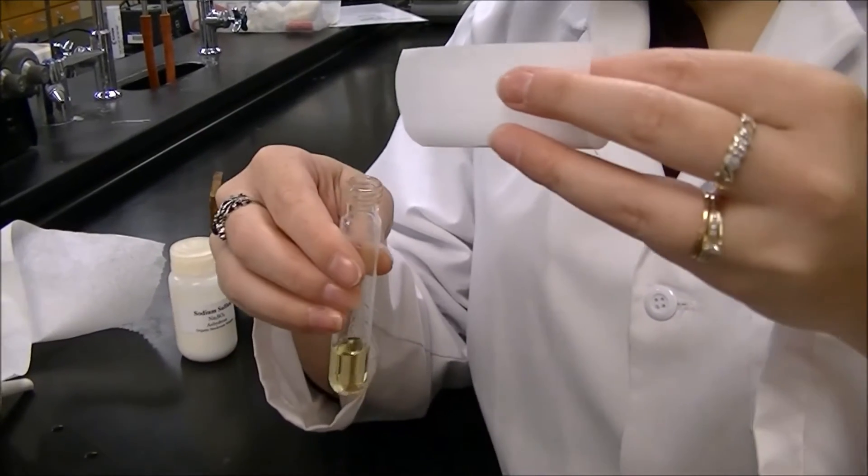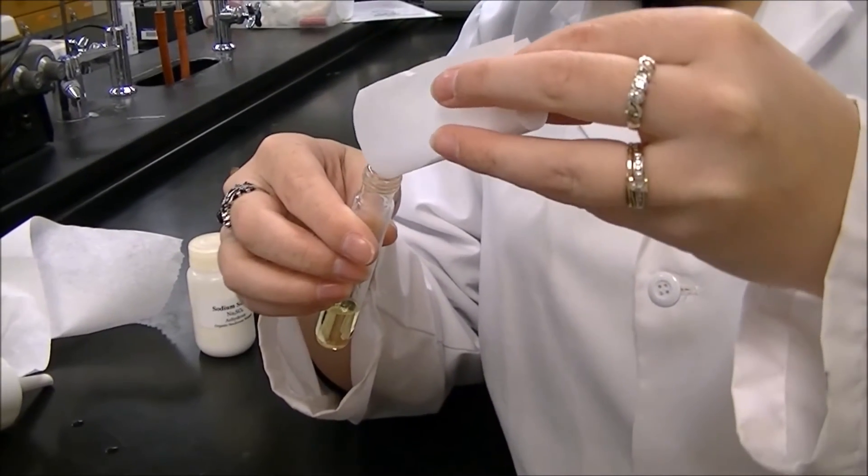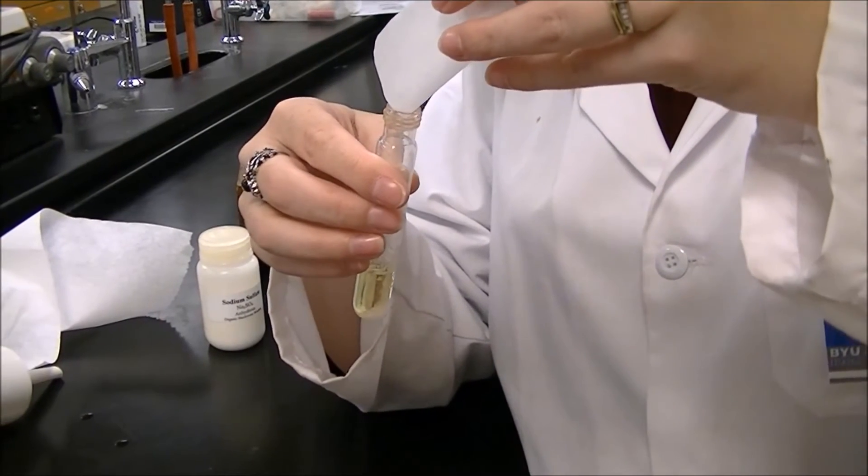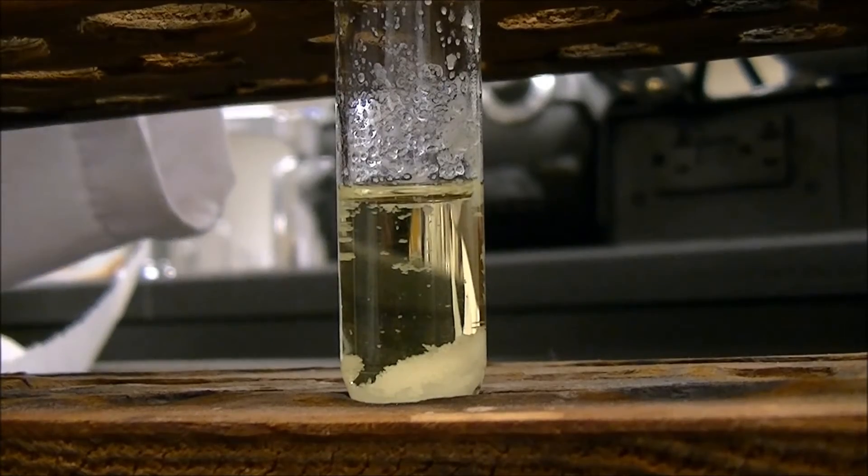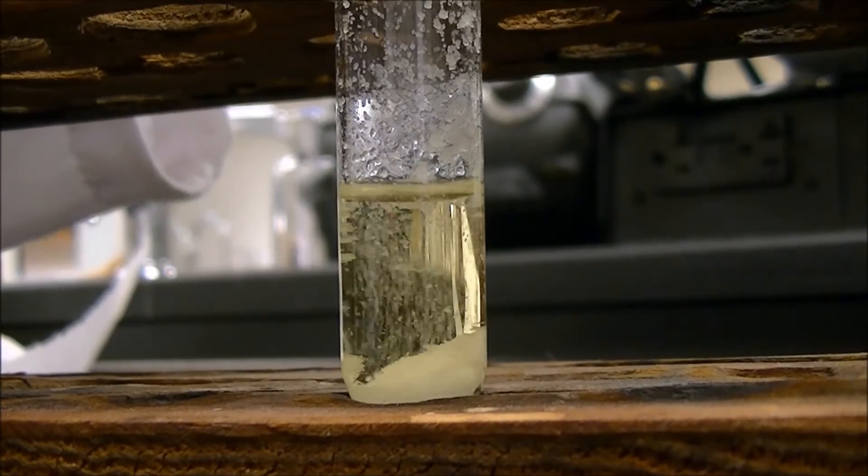Now to our remaining organic layer, we'll add anhydrous sodium sulfate. Keep adding anhydrous sodium sulfate until there is no more clumping.